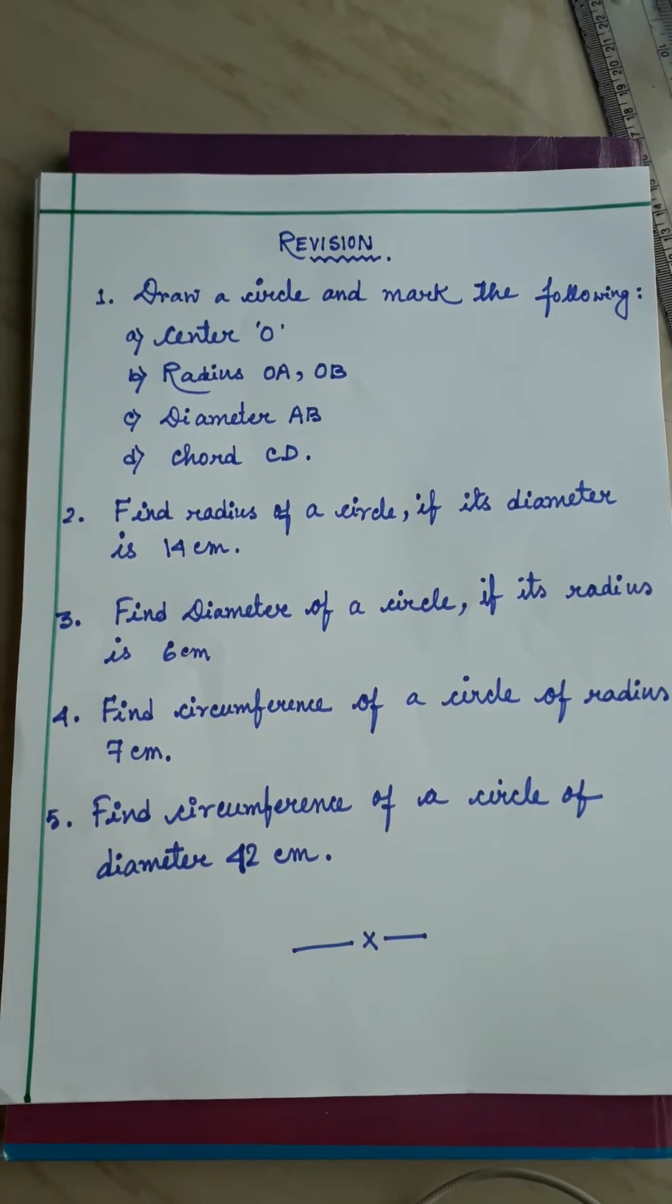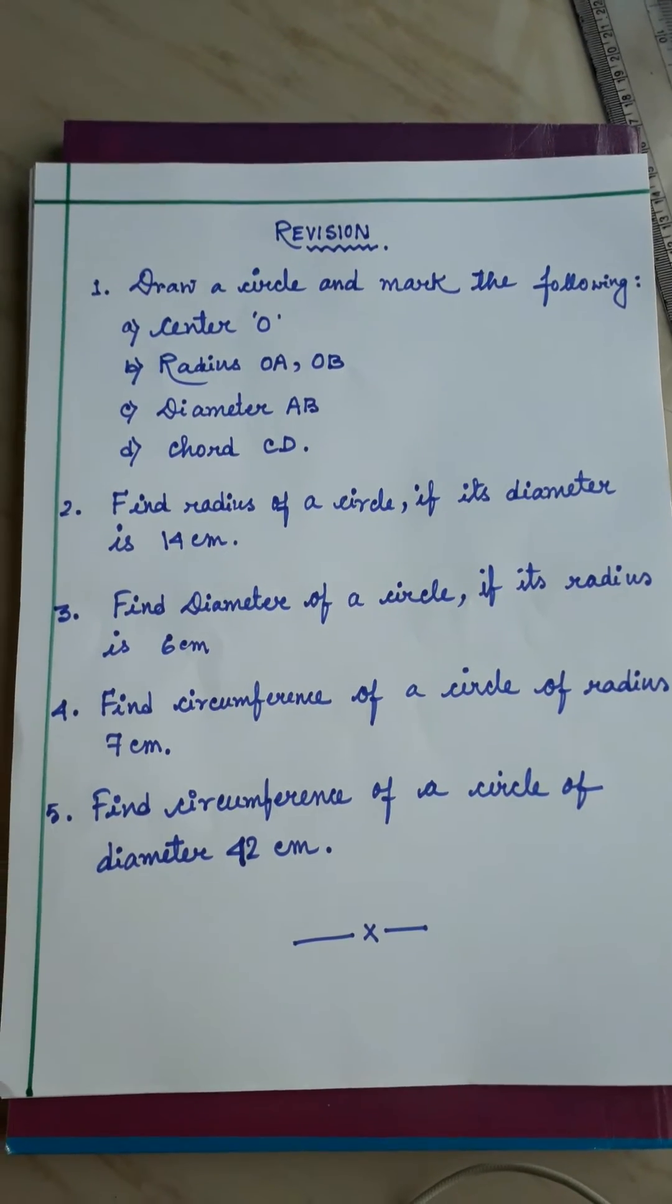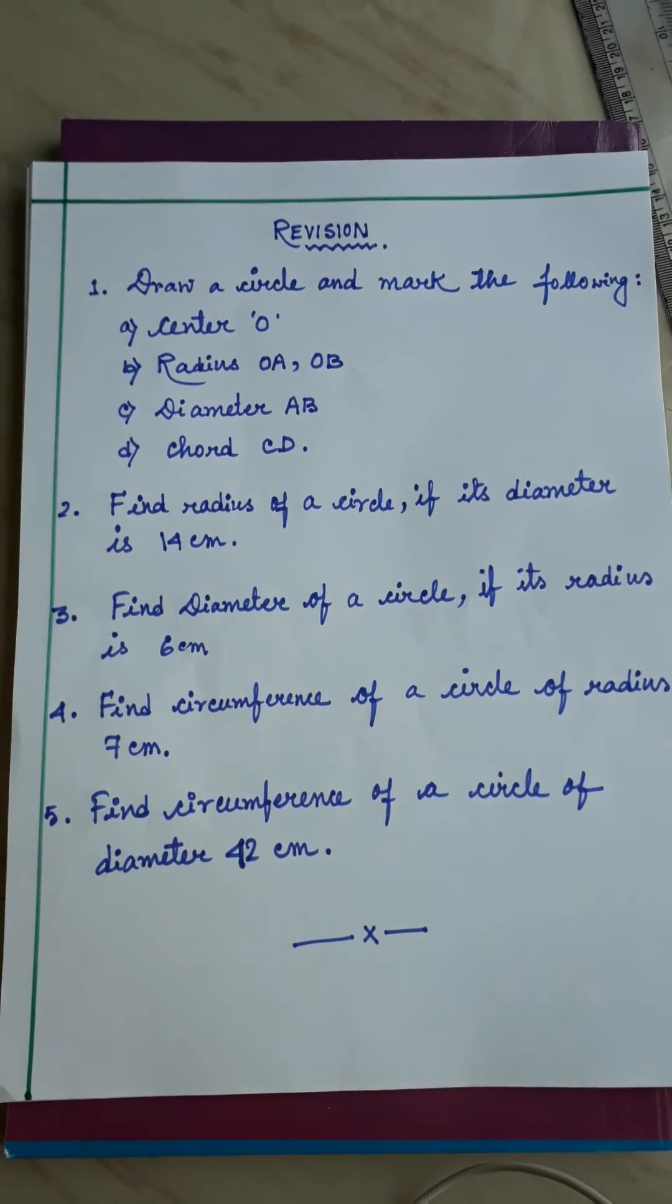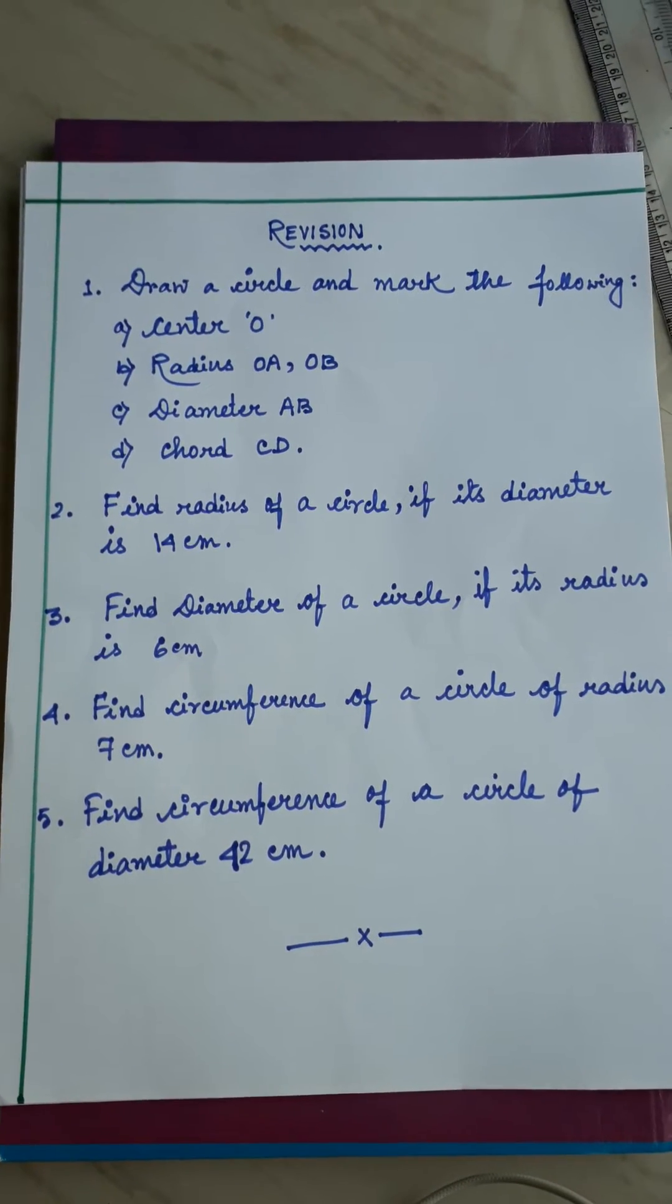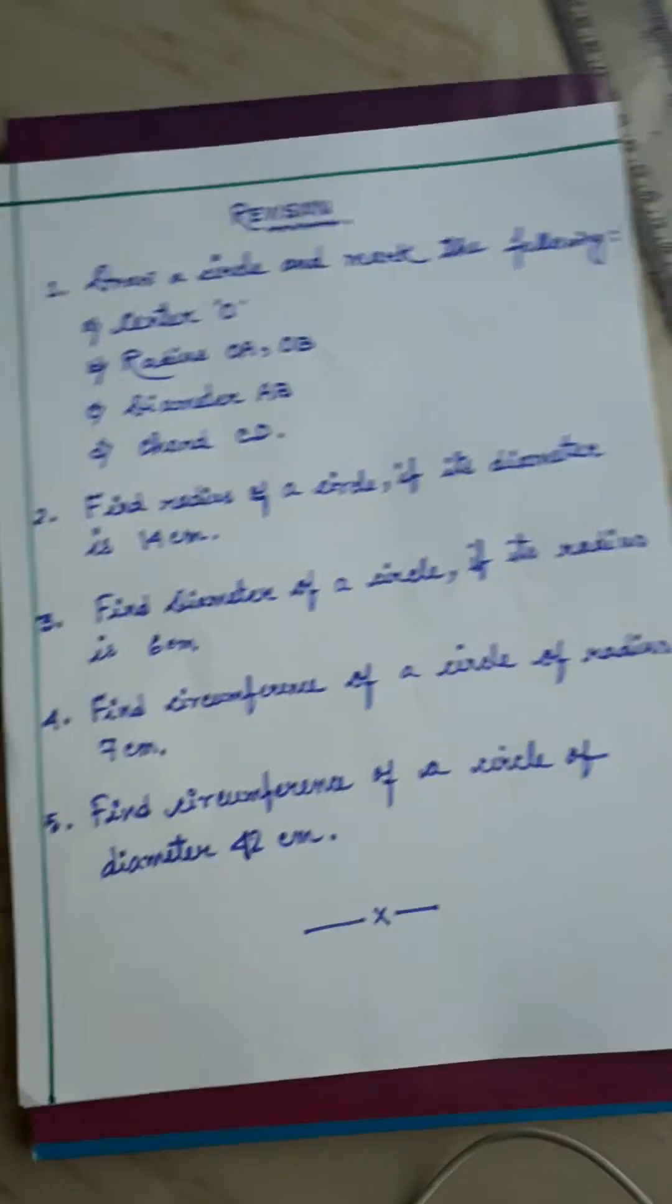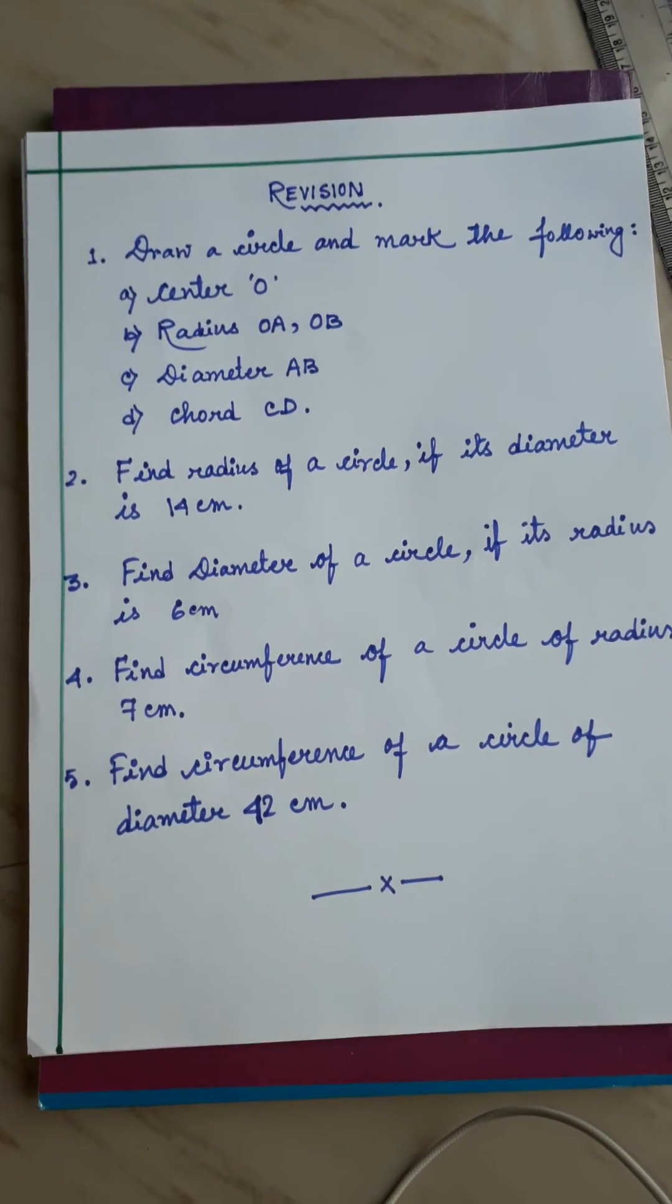You have to draw a circle by your own and you have to mark center O, radius OA or OB, diameter AB, chord CD. So these are the 4 things that you have to mark in the circle.